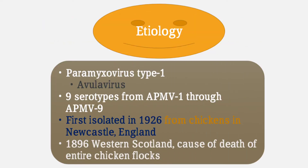The etiologic agent of Newcastle disease belongs to the family Paramyxoviridae, specifically Paramyxovirus type 1 (APMV-1), genus Avulavirus. There are nine serotypes from APMV-1 through APMV-9; APMV-1 is responsible for Newcastle disease. It was first isolated in 1926 from chickens in Newcastle, England, though an earlier 1896 outbreak in Western Scotland that killed entire chicken flocks is also attributed to this virus.